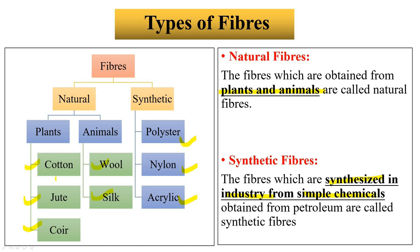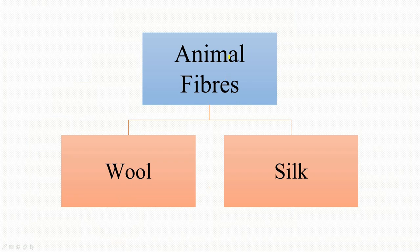In Class 6, we studied about plant fibers — cotton and jute. So in this chapter, we will particularly study about animal fibers: wool and silk. Let's study about wool first.